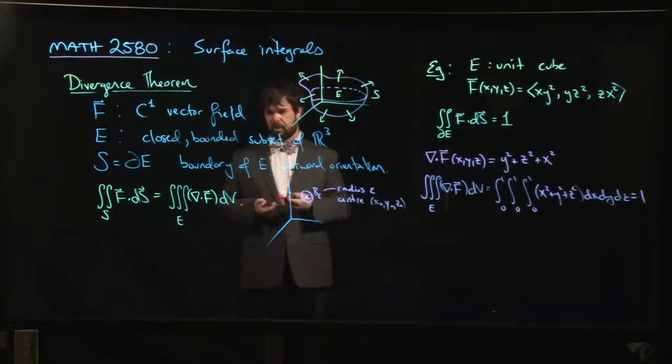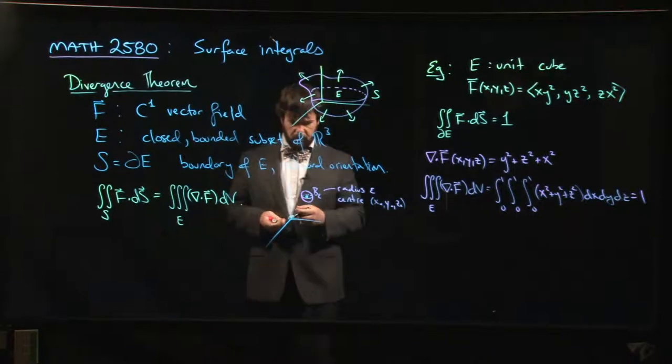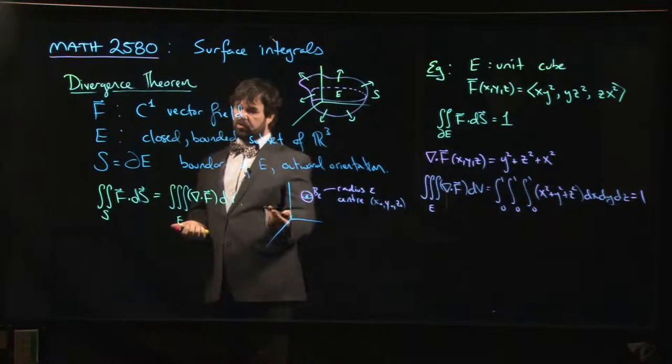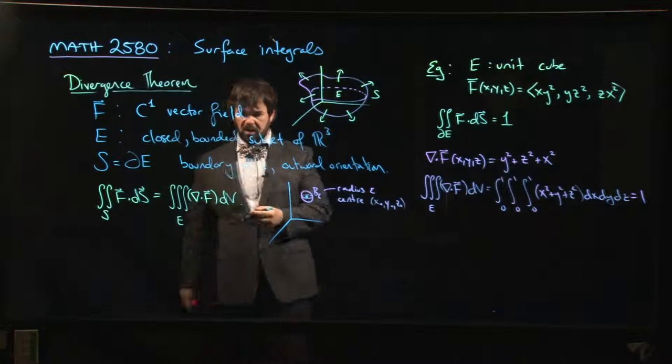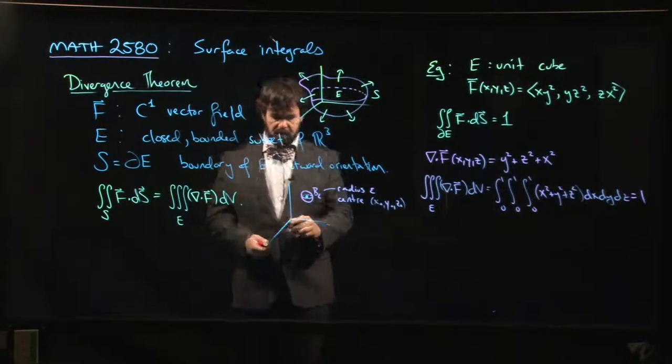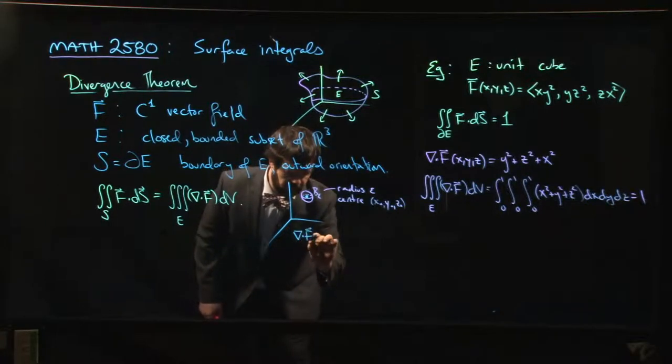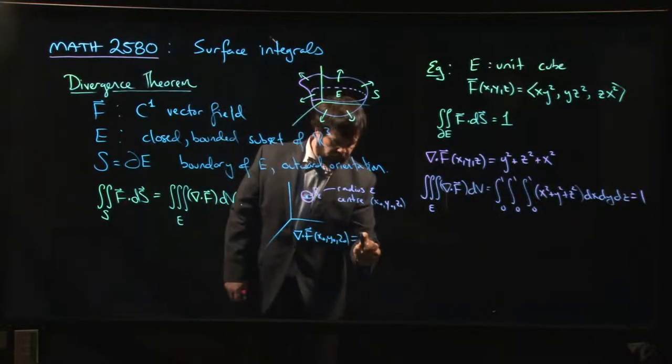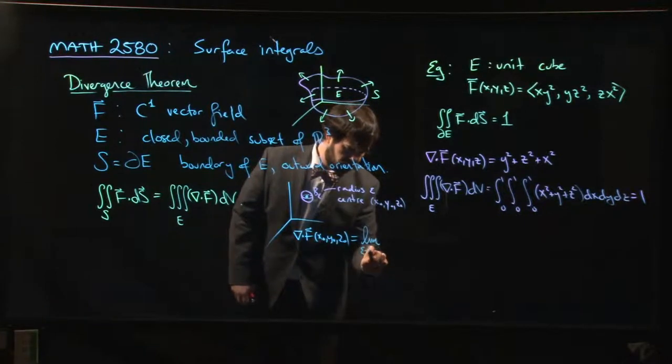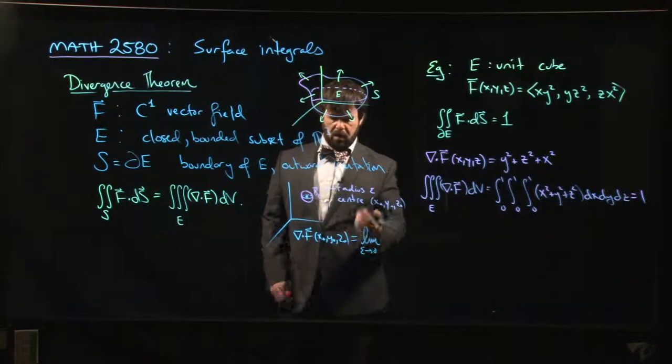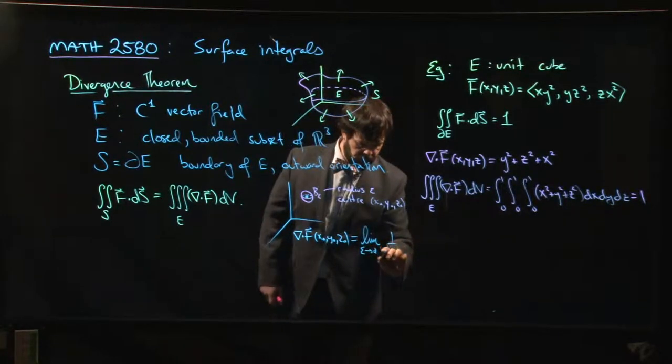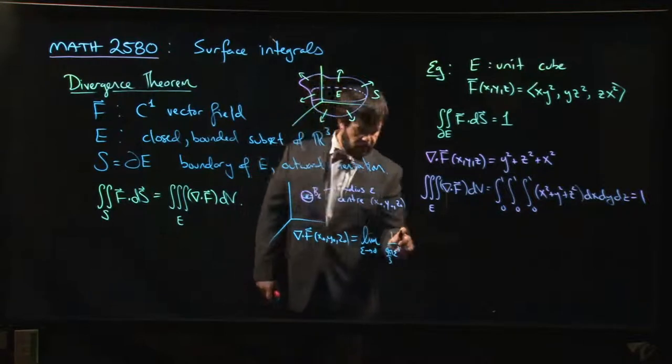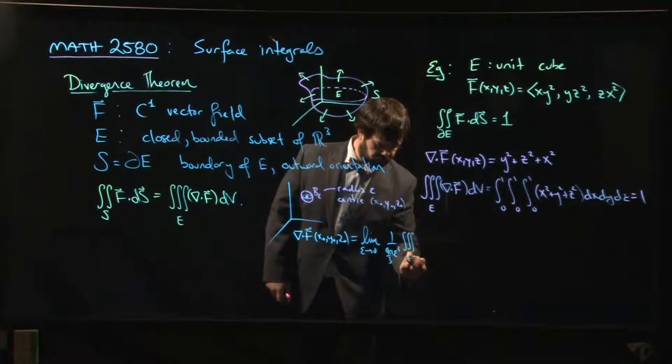And so basically what you can do is you can kind of play around with this, right? And you can say, okay, well, you know, for a C1 function, continuously differentiable, so the divergence is going to be continuous, you can make a continuity argument that says essentially that the divergence of F at this point, x-naught, y-naught, z-naught, it should look something like the limit as epsilon goes to zero of, well, one over the volume, so one over, you know, like, four pi, four-thirds pi epsilon cubed, something like that, one over the volume, times the triple integral, right?